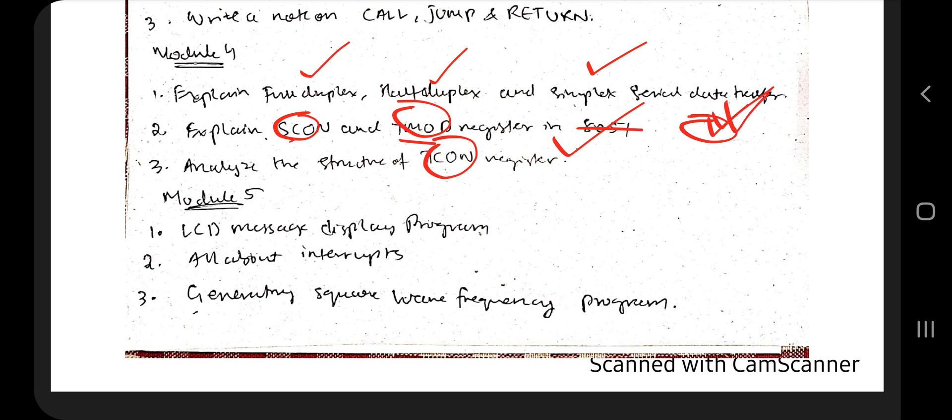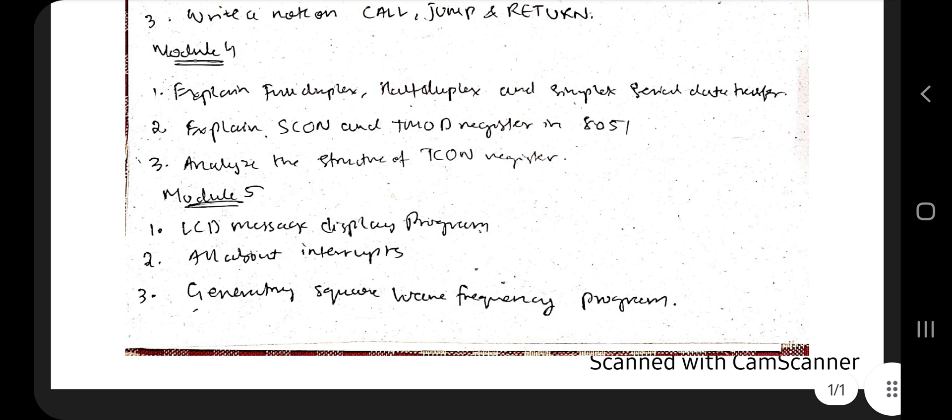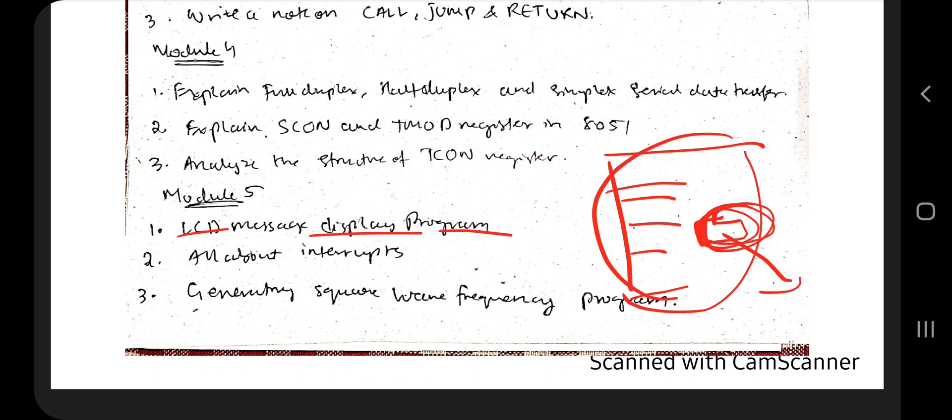Coming to Module 5, what we have is the LCD message display program. They will be asking you to display many texts like hello world in the LCD. You need to know the basic concept of writing the code - how to write the code for LCD and which part of the code you need to change so the output changes. If you memorize this program, a high chance is there that this could be asked in the exam.